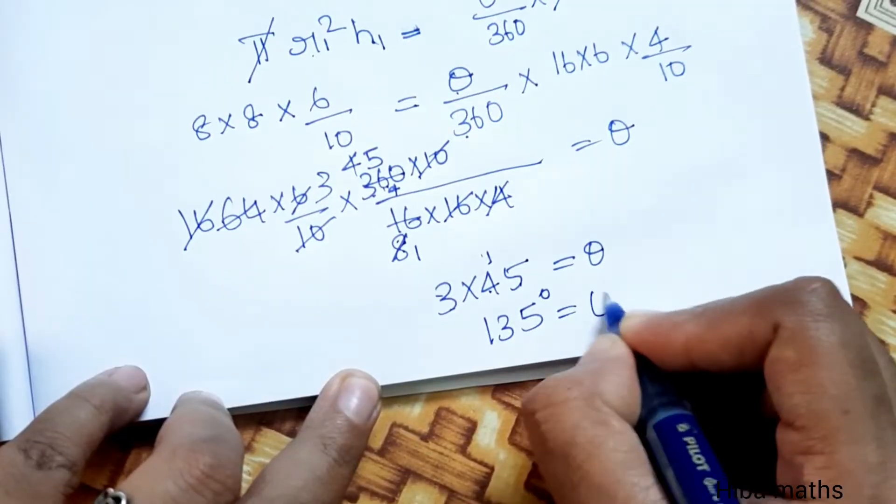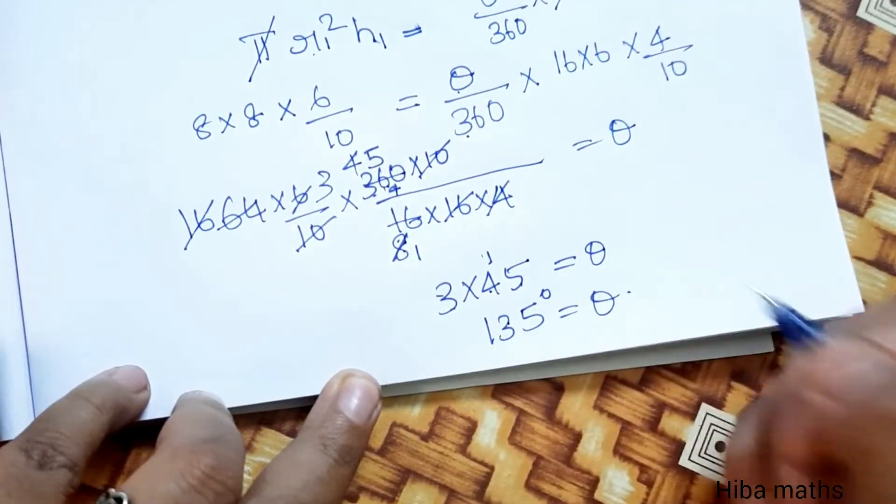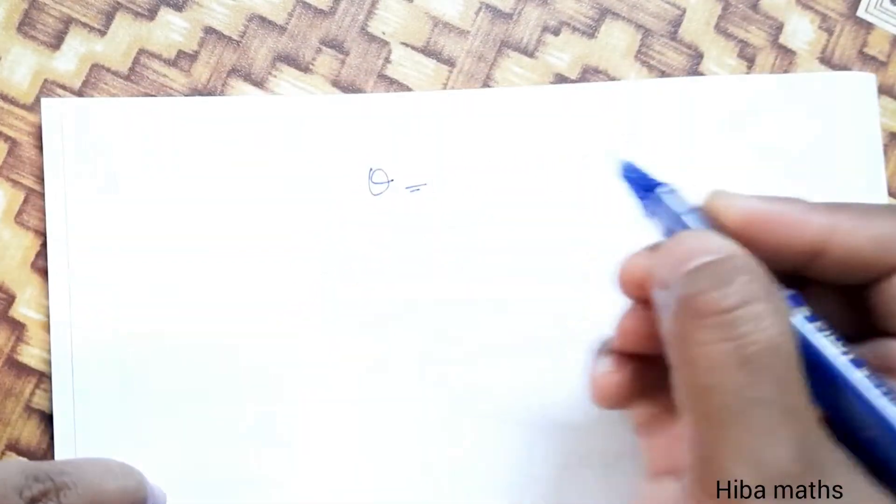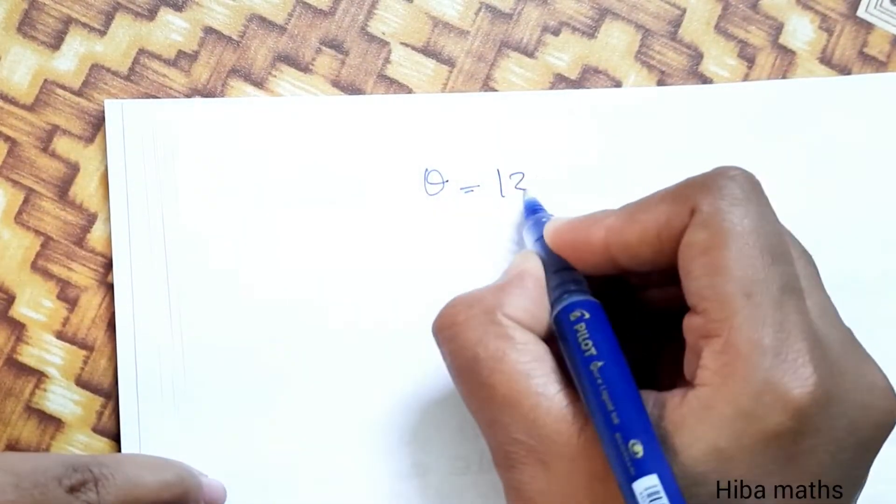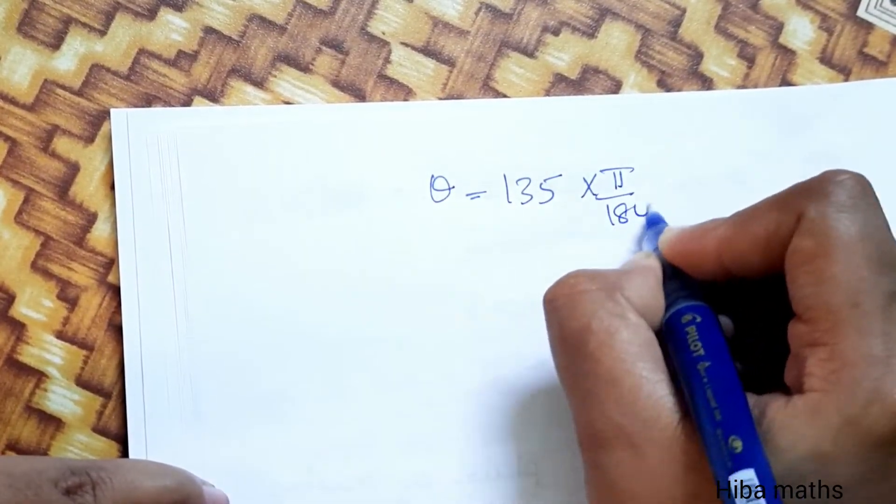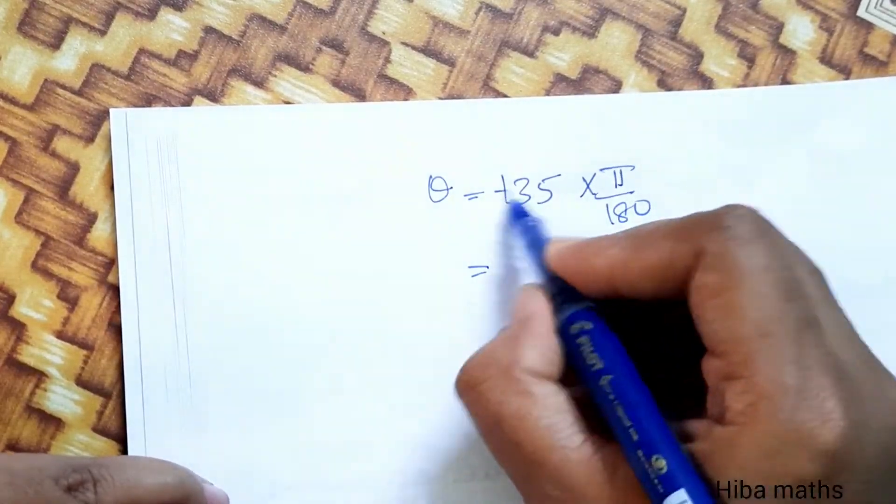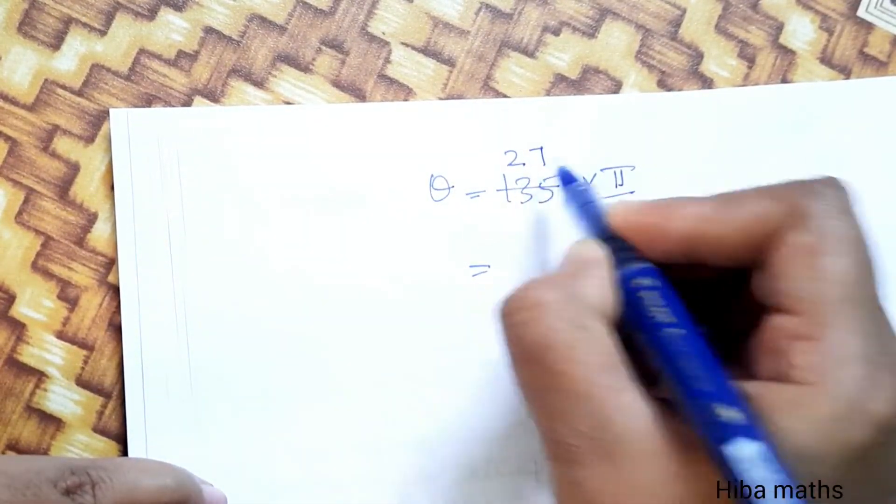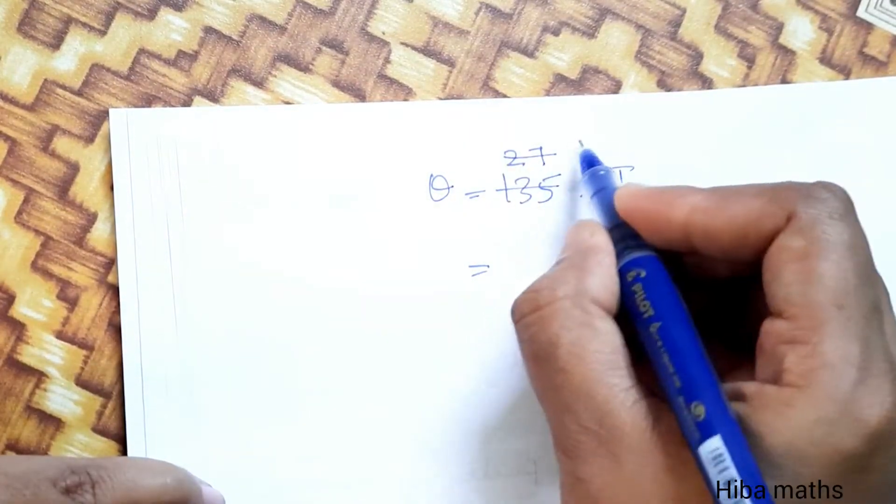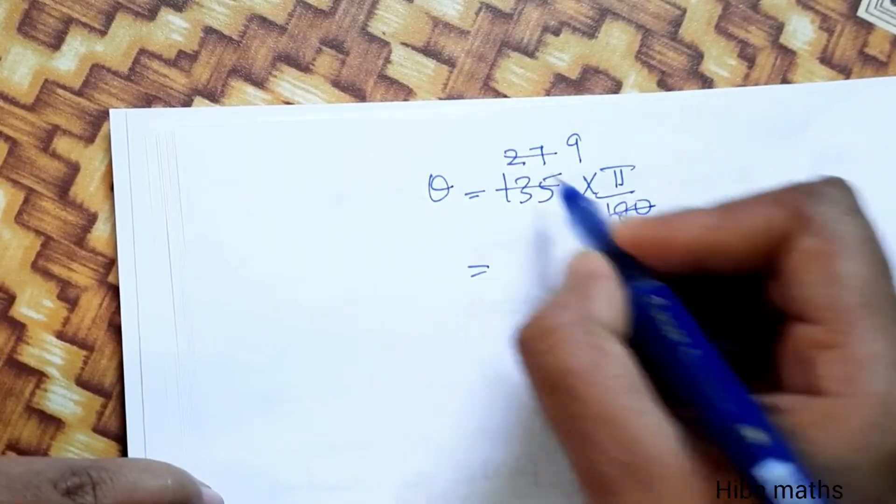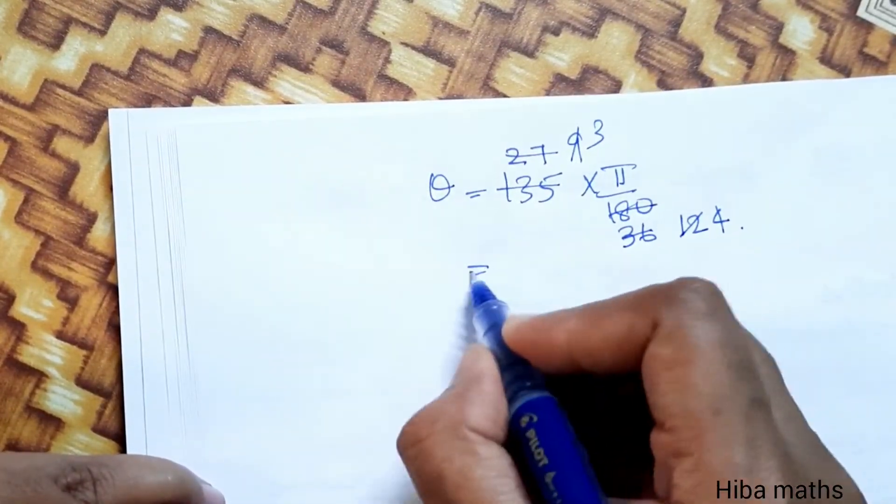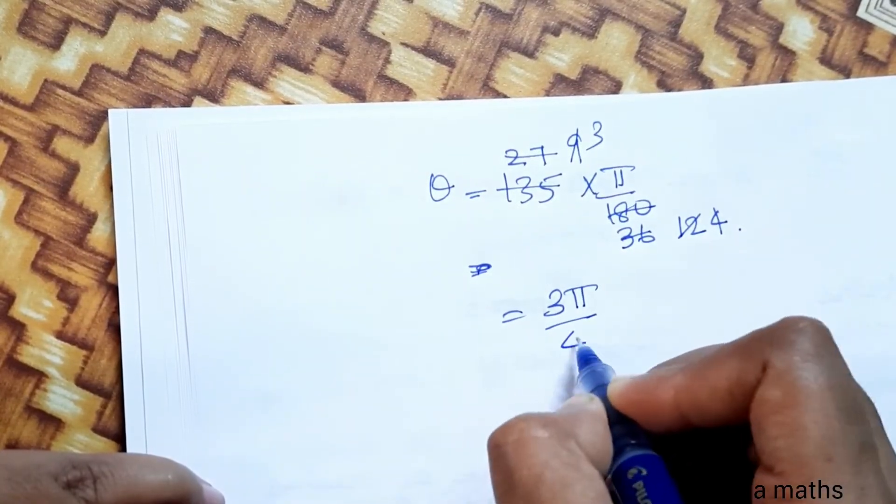Converting degrees to radians: θ = 135° × (π/180). Simplifying: 135/180 = 3/4, so θ = 3π/4 radians.